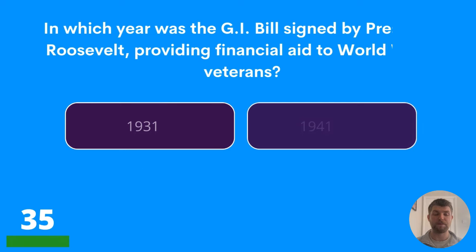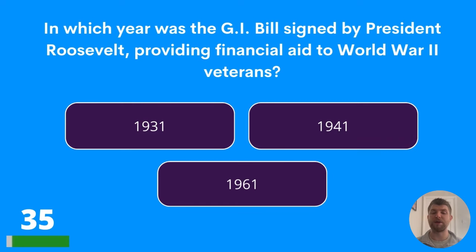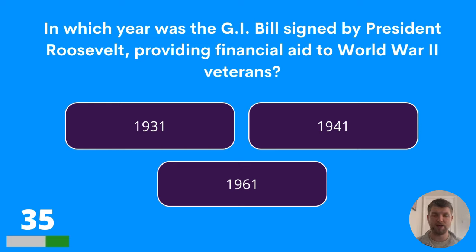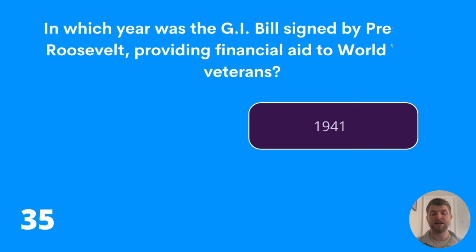Question thirty-five: in which year was the G.I. Bill signed by President Roosevelt, providing financial aid to World War II veterans? 1931, 1941, or 1961? The answer is 1941.